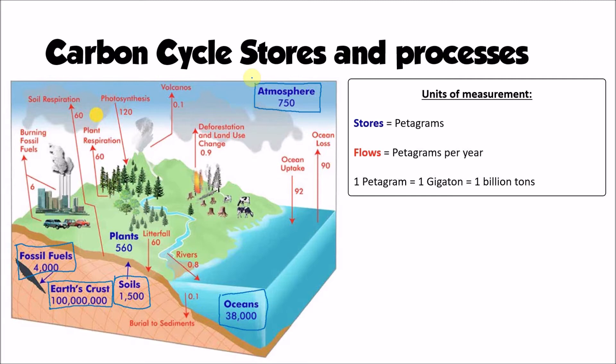The smallest store overall is the biosphere, particularly plants store about 560 petagrams of carbon. So a relatively small percentage when we consider it in relation to things like the oceans, but a significant store nonetheless because that carbon is very easily moved out of that store.